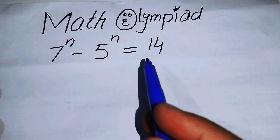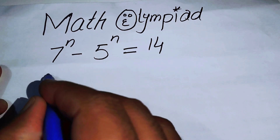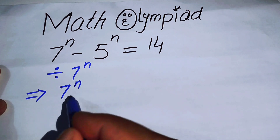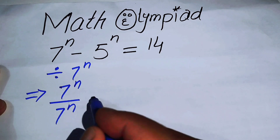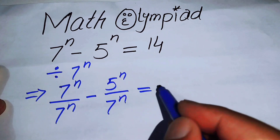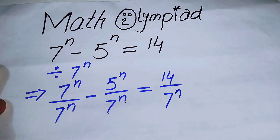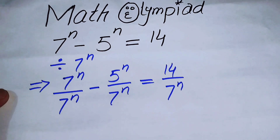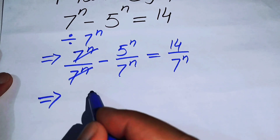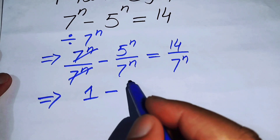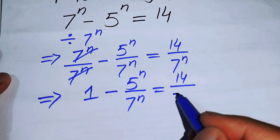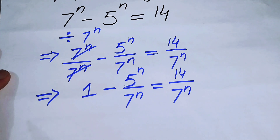The first thing we are going to do is divide both sides by 7 to the power of n. After this step we get 7^n over 7^n minus 5^n over 7^n equals 14 over 7^n. The first terms cancel, giving us 1 minus 5^n over 7^n equals 14 over 7^n.